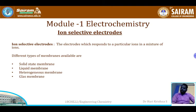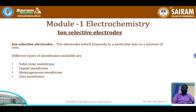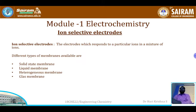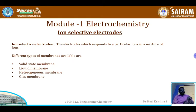An ion selective electrode is a type of electrode which responds to the concentration of only one specific type of ion, even though it is dipped in a solution containing n number of ions. So I dip an electrode that responds to fluoride ion concentration only into a mixture, and it will measure only the fluoride ion concentration.